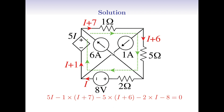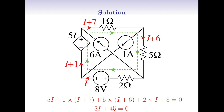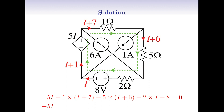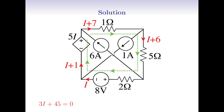We can now simplify it to get 3I plus 45 is equal to 0. Arbitrarily, we can set the sign assignment convention the other way around: whenever we pass through a voltage source from a positive end we get a plus sign, and whenever we pass a voltage source from the negative end we get a negative sign. Accordingly for resistors, whenever we pass a resistor in the direction of the current we get a plus sign and vice versa. In this way, we start with minus 5I, and get plus 1 multiplied by I plus 7, then plus 5 multiplied by I plus 6, and plus 2 multiplied by I. We then get plus 8 for the 8 volt source entered from the positive end, and close the loop by setting it to 0. Both conventions give the same result — choose whichever you feel more comfortable with.